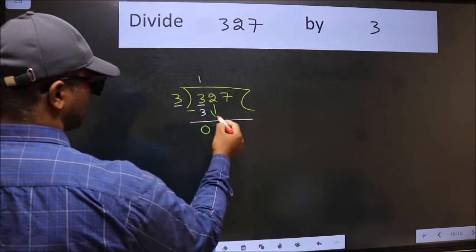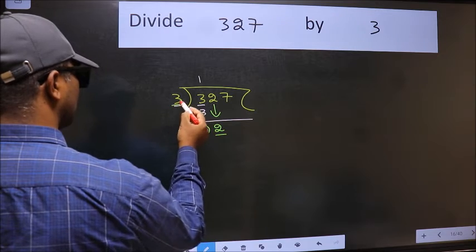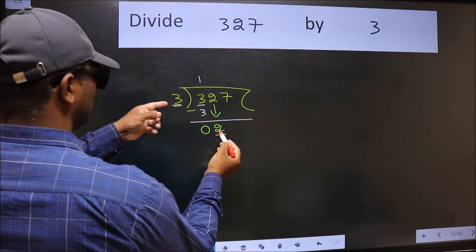After this, bring down the beside number. So 2 down. Now here we have 2 and here 3. 2 is smaller than 3.